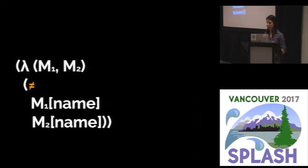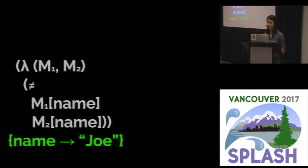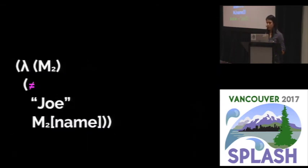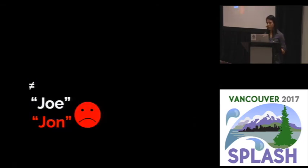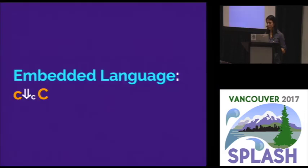For example, if our constraint is just inequality and we're asking the solver for names, then we might get back Joe. Next time we'll assert that the name is not Joe and maybe we'll get back John. But Joe and John are really similar. And this is really common for SMT solvers because they have a tendency to explore close spaces for the sake of efficiency. But this might not be good for testing.